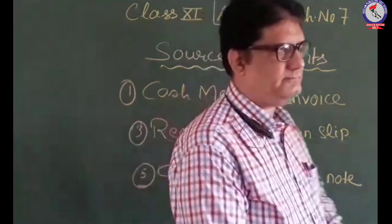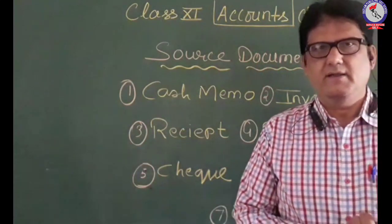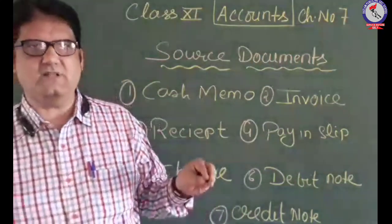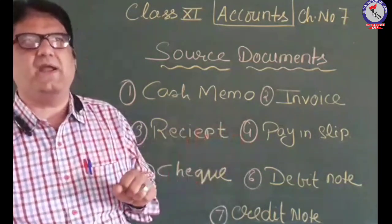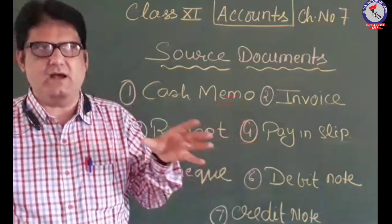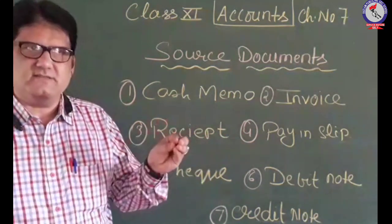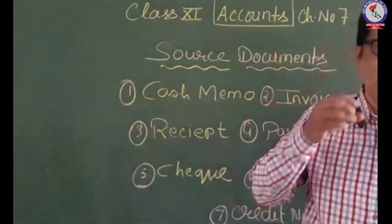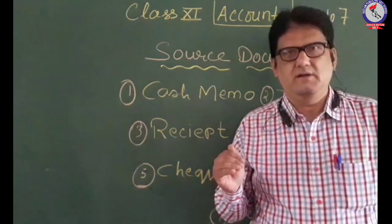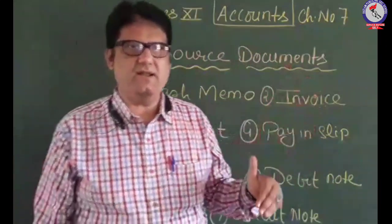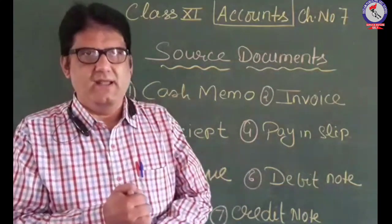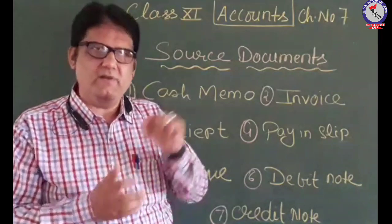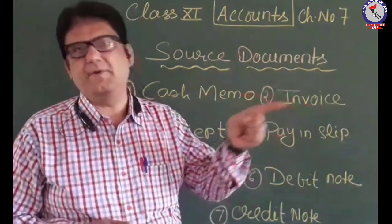Then comes debit note. A debit note is that document which shows that the concerned person's account is being debited by a certain amount. For example, if the seller has sold goods but charged a lesser price, he will prepare a debit note in the name of that party, mentioning the difference amount. This is evidence that a certain amount — as a difference in rate — will be paid by the concerned person named in the debit note.